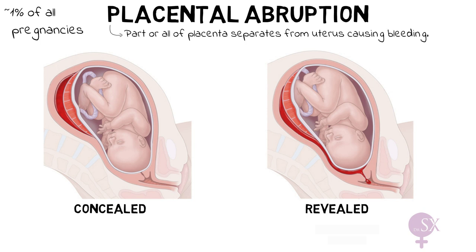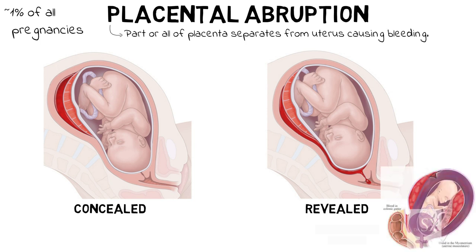If the bleed causes large pressure within the uterus, sometimes the blood can extend into the myometrium, and this is referred to as a Couvelaire uterus. The uterus would appear purple and bruised, as we can see in this image. In some cases the blood may also enter the liquor, and patients will present with blood-stained liquor.